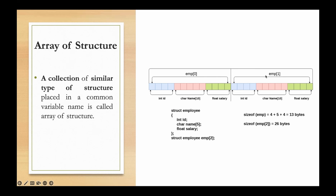For the array of structures, the size is calculated based on the member types. For example, if the ID is an integer, that is 4 bytes. With 13 members multiplied by 2, the total data memory space is 26. A for loop is used to iterate through the array of structures.